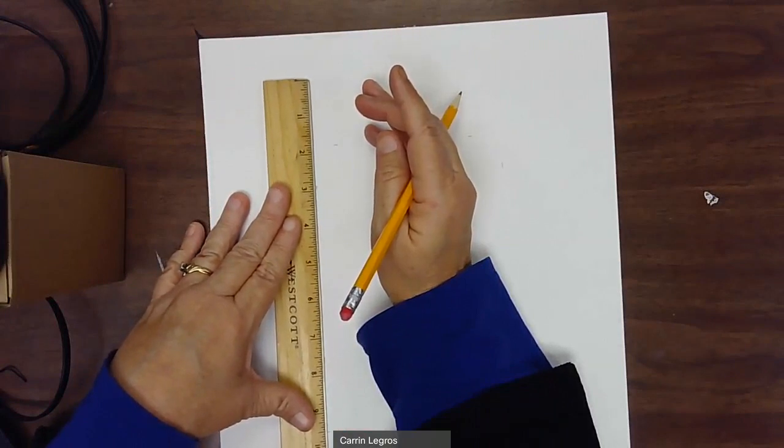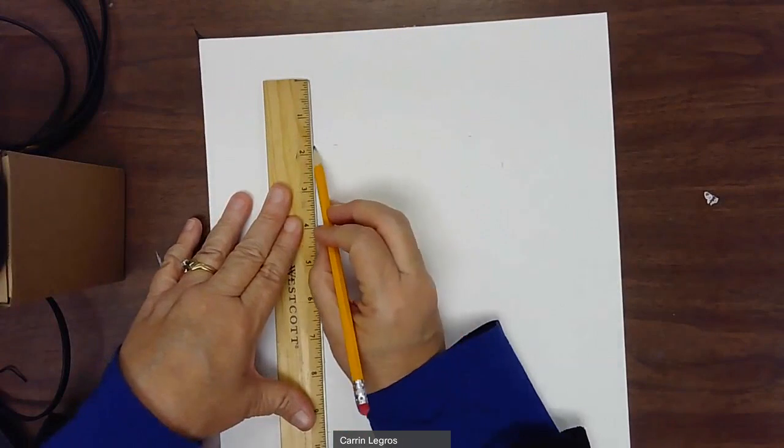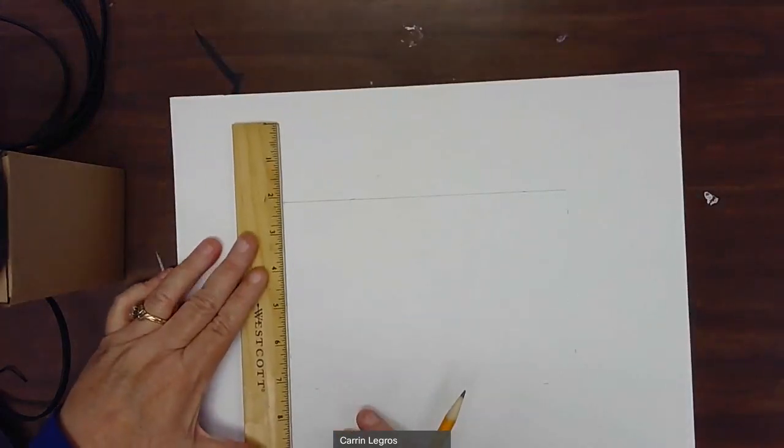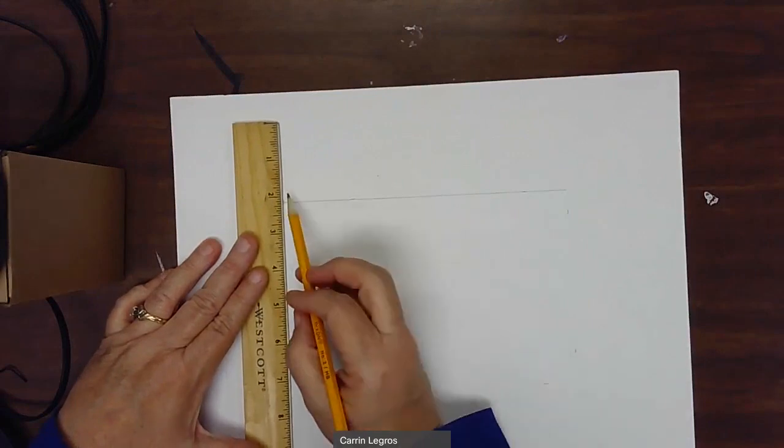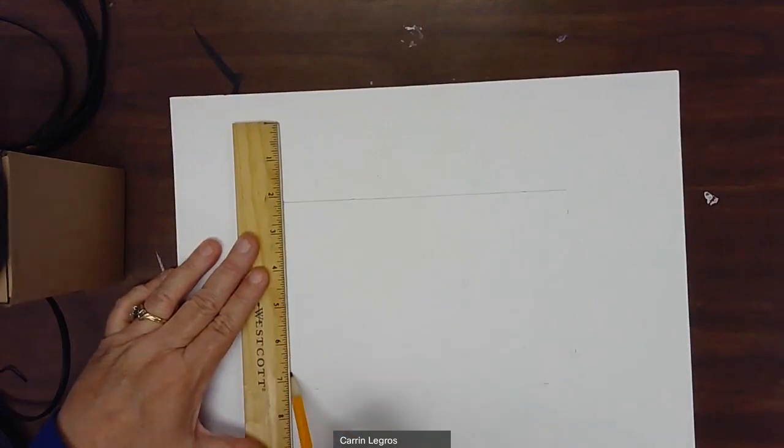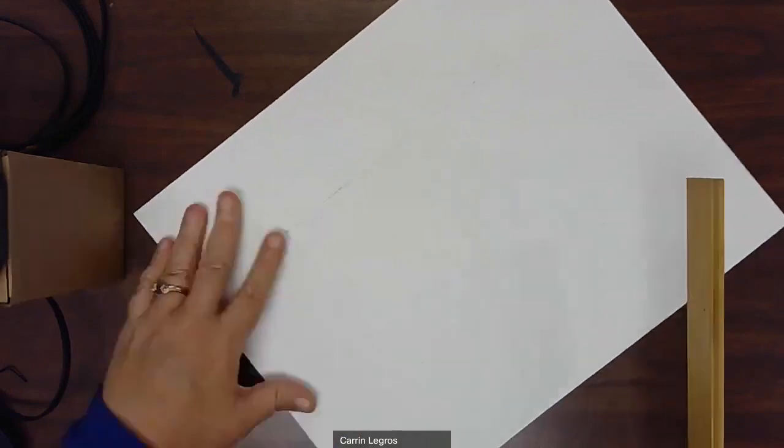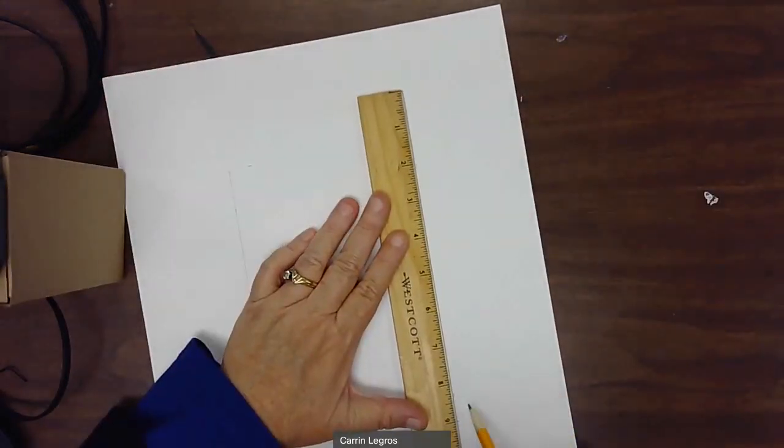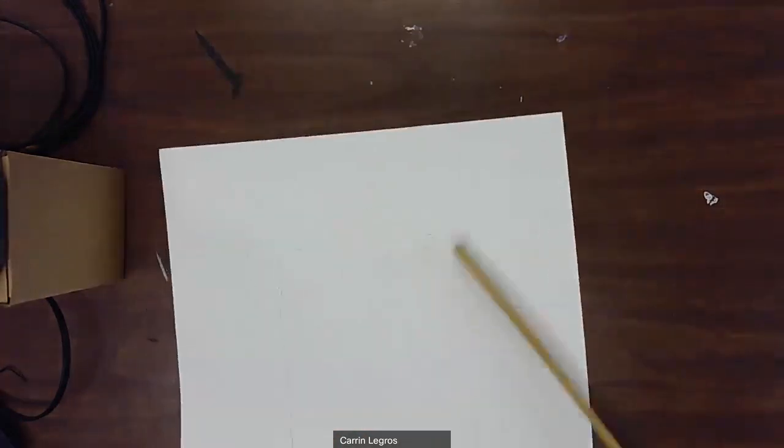I'm lining up the ruler with those little marks that I made and I'm making a line. I'm not doing this too darkly because I may have to erase part of this in just a little while, but I'm going to go around and do each side to create a border. It creates a rectangle in the center of our page and becomes part of our design.